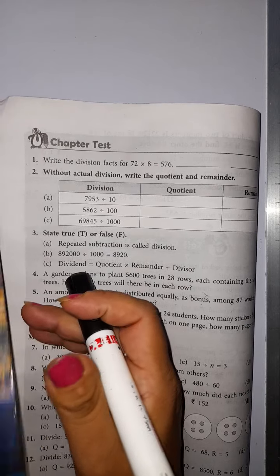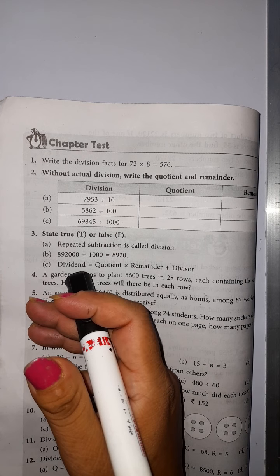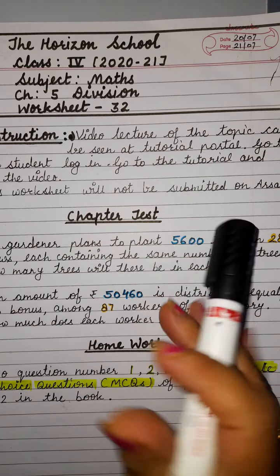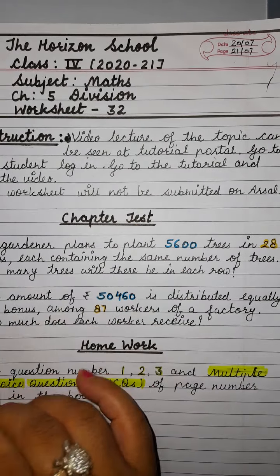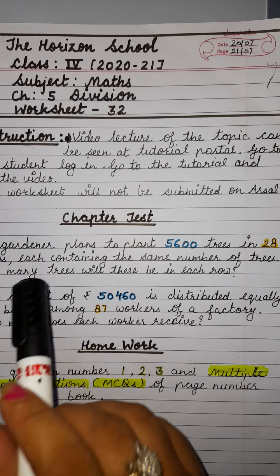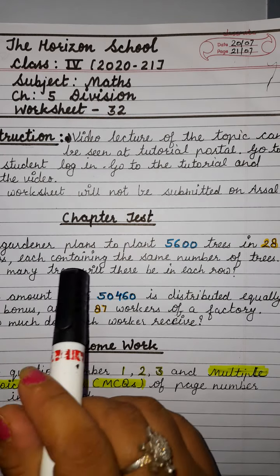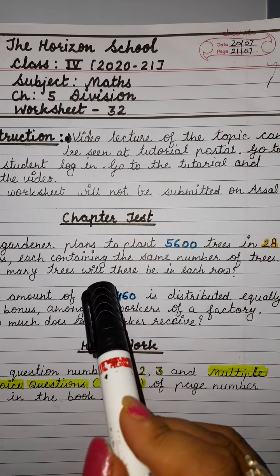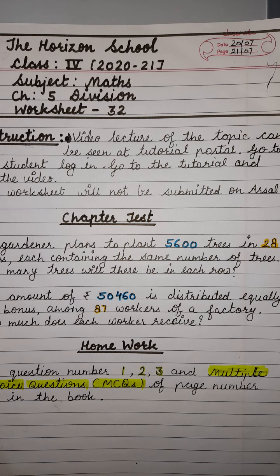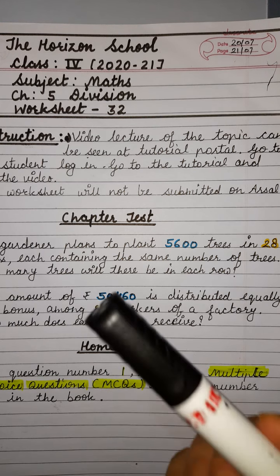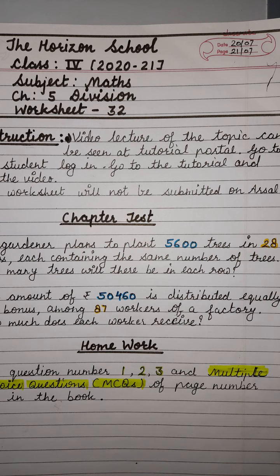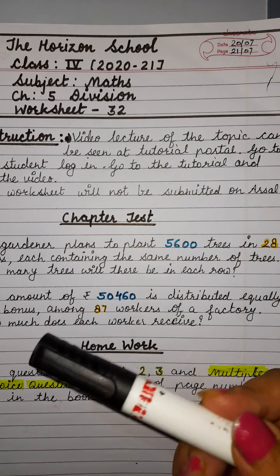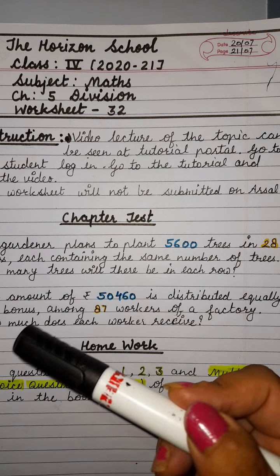Question numbers four and five you have to solve in your worksheet — in your notebook — like this, because this is a chapter test so I will not solve it. You will solve it yourself. Do not ask your parents. Solve both these sums in your maths fair notebook, the one you have been using, and write down the answers there. Then I'll give you marks.